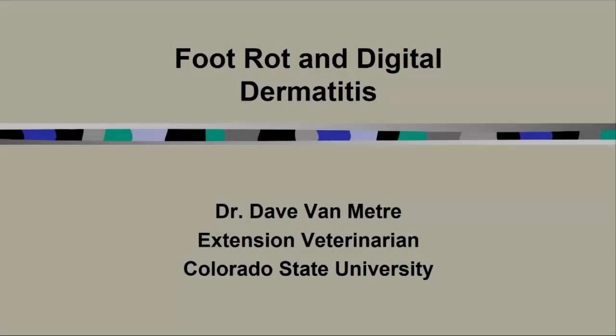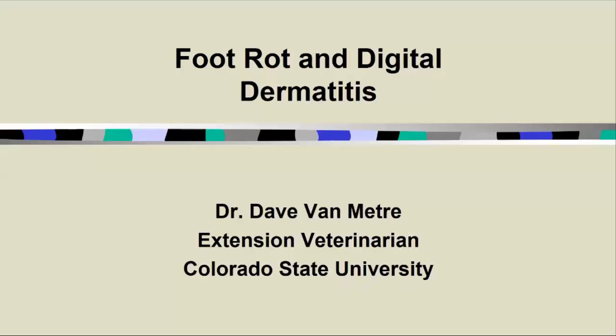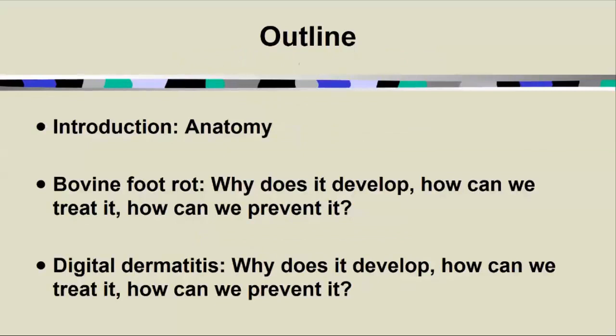Hello, everyone. This is Dr. Dave Van Meter. I'm an Extension Veterinarian at Colorado State University. I'm going to talk to you today about some common causes of lameness in dairy cattle, specifically foot rot and digital dermatitis. We'll start with a brief introduction of some anatomic terms to make sure we're all on the same page. And then for each disease, we're going to describe why the disease develops, how we can treat it, and what measures we can take to prevent it.